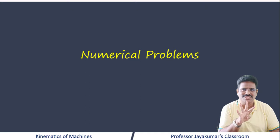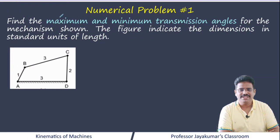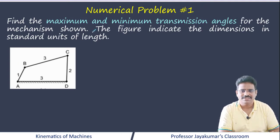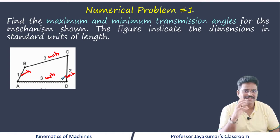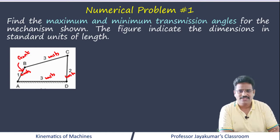Let us take the first problem: find the maximum and minimum transmission angles for the mechanism shown. The figure indicates the dimensions in standard units of length. The given data represents the lengths of the four links, and we need to find the minimum and maximum transmission angle.